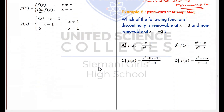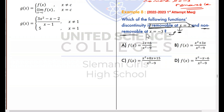Another question, 2023 first attempt. It's asking about two types of discontinuity: removable and non-removable. Which function's discontinuity is removable at x equals 3, but non-removable at x equals negative 3? So when you factorize, 3 should go away, but at negative 3, your factor will stay after cancellation.